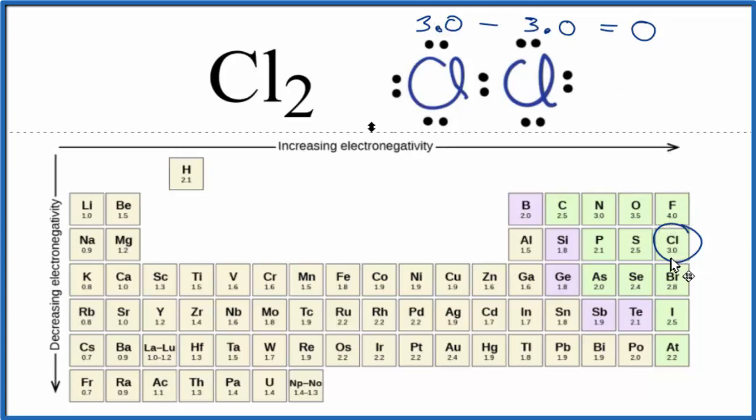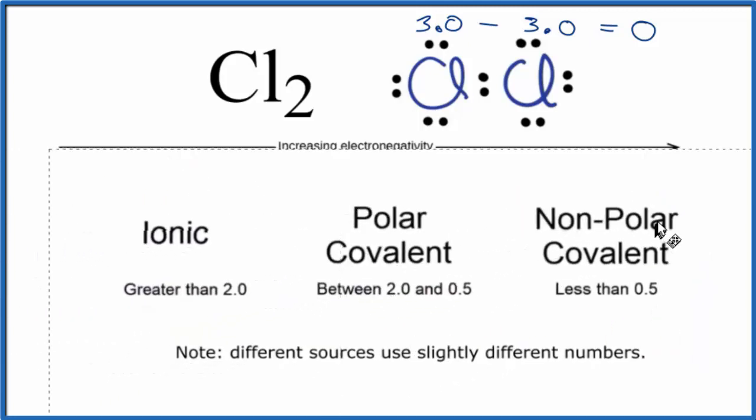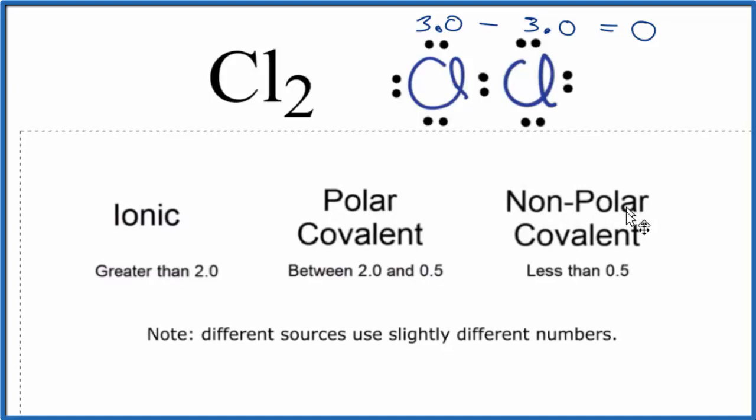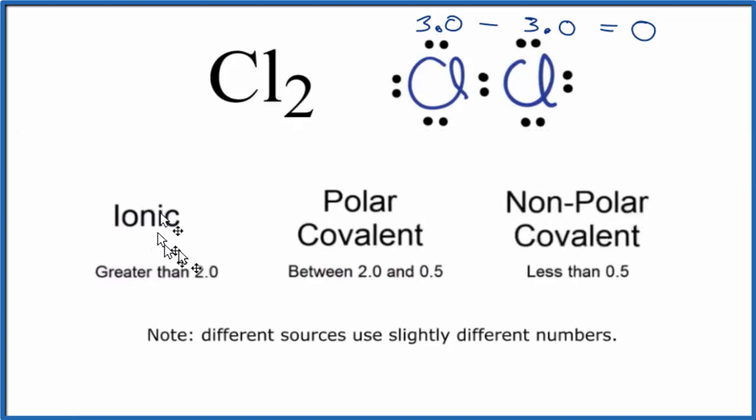When we think about bonding, we think of it as a continuum. So, here we have, on one end, nonpolar covalent, and then on the other side, ionic. And if we look at the difference in electronegativity, if it's less than 0.5, we consider that nonpolar covalent. Here we have zero. You couldn't be much less.